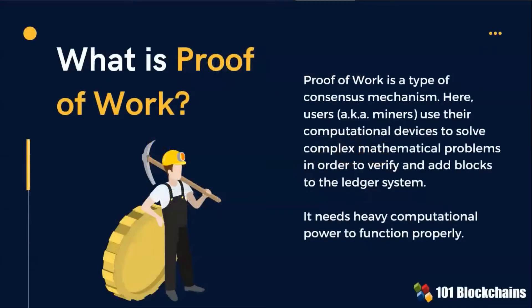Proof-of-Work is a type of consensus mechanism. Users, also known as miners, use their computational devices to solve complex mathematical problems in order to verify and add blocks to the ledger system. Proof-of-Work needs heavy computational power to function properly.